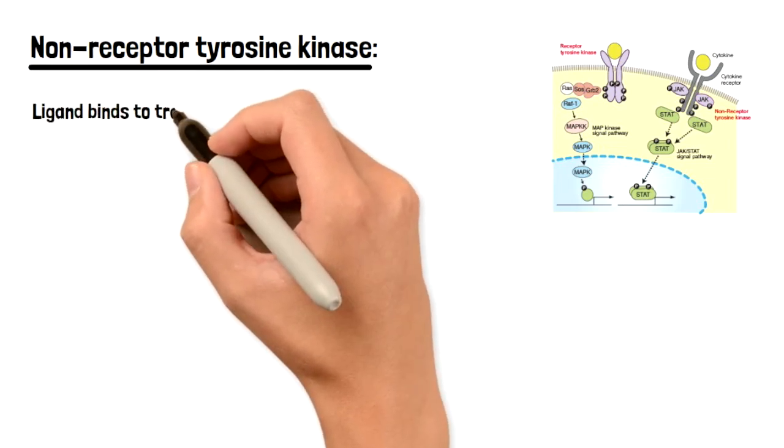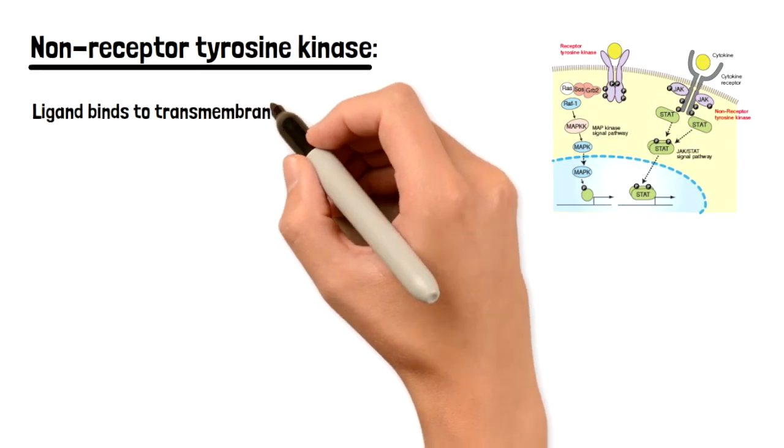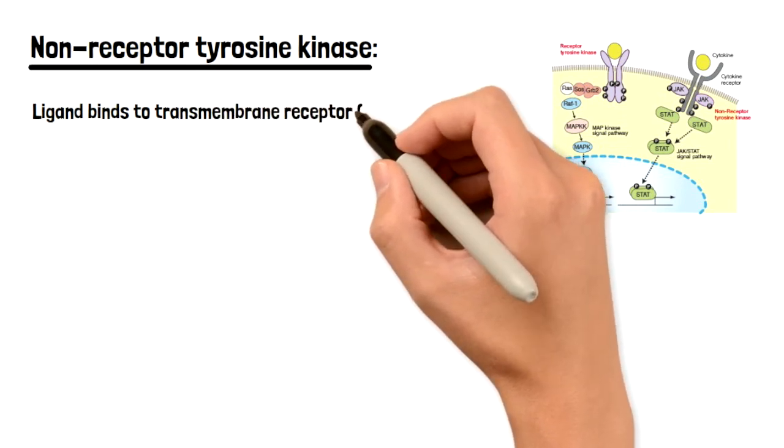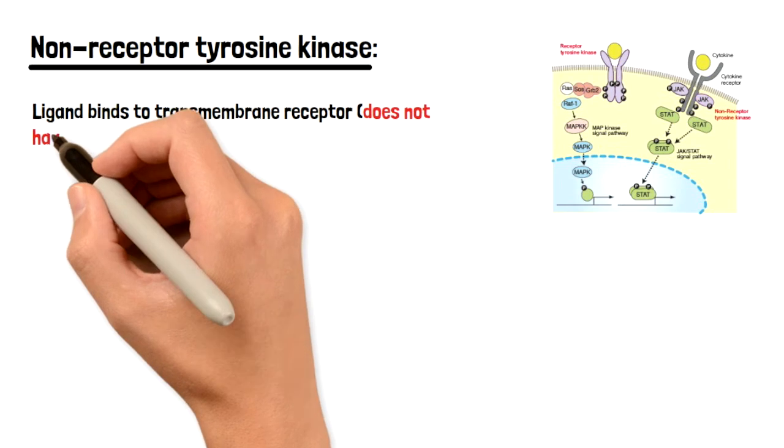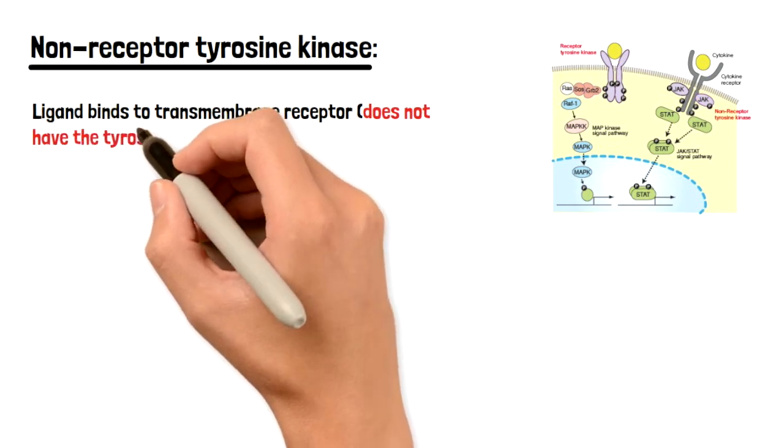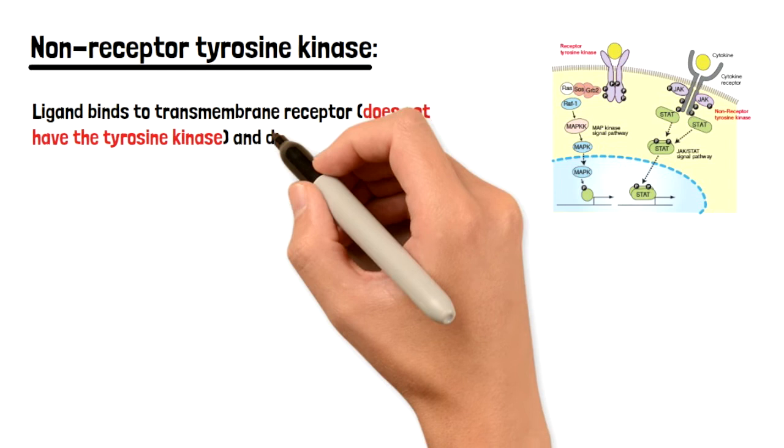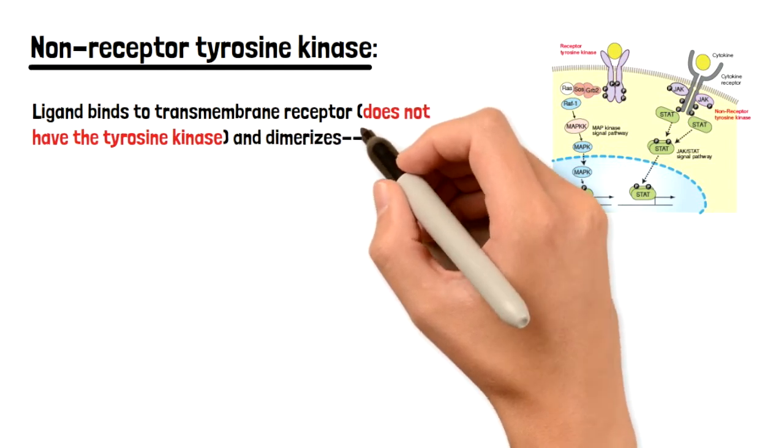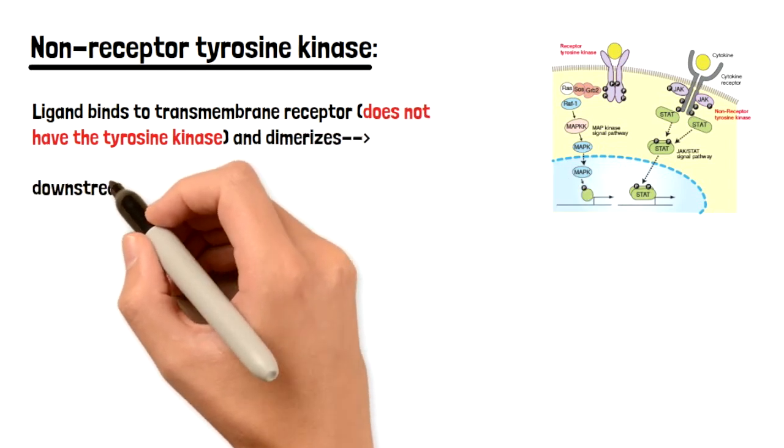So when this ligand actually binds, it's not going to cause phosphorylation of the receptor. There's no tyrosine residues on that receptor, but there are tyrosine residues adjacent to the receptor on the JAK. So it's going to cause phosphorylation of the tyrosine residues on JAK.